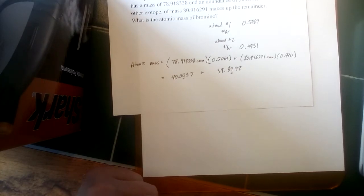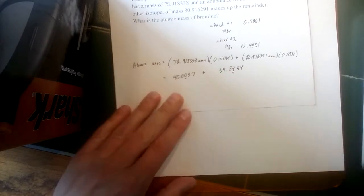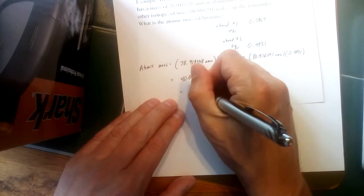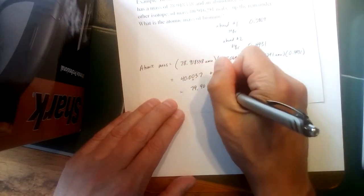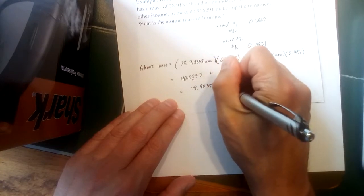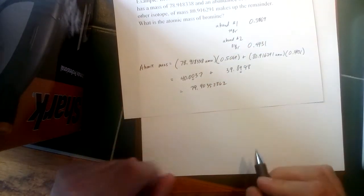So this is 79.90352862. But again, we're adding here. They're both significant to the second place after the decimal.